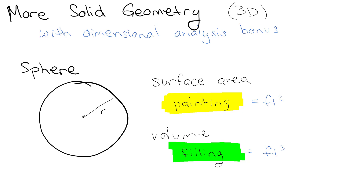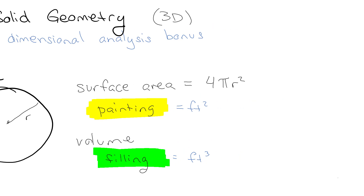In order to do surface area and volume for a sphere, this actually does require some calculus, so we're not going to get into the derivation. But the surface area of a sphere is 4πr². And again, you can see the dimensions: we have dimensionless, dimensionless, and then r² is in feet squared. So dimensionless times dimensionless times feet squared gives us feet squared.